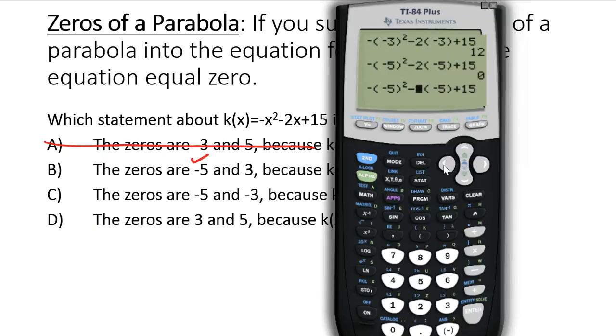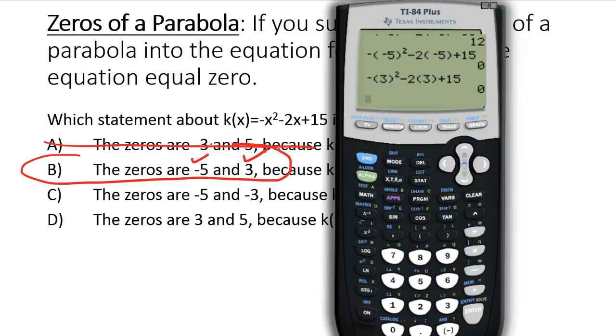Then I'm going to go over to where the parentheses are and change what's inside the parentheses to a positive 3. So go change the other one to a positive 3. Zero. Great. We found the two zeros of the parabola.